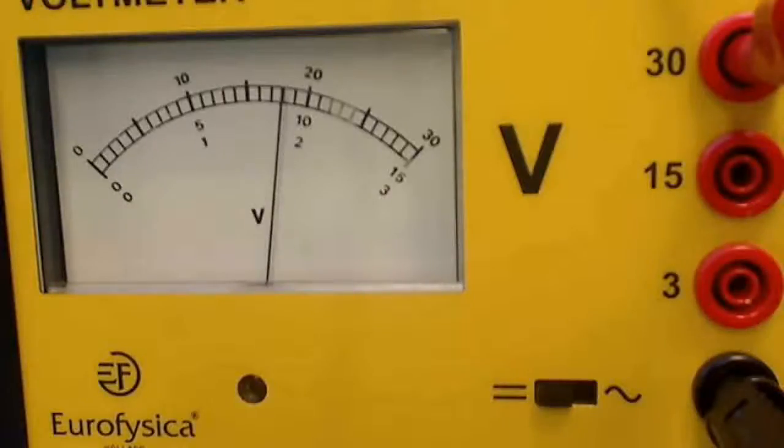In this video I'll explain how to accurately read an analog voltmeter. As you can see, this voltmeter has three different scales for voltages up to 3, 15, and 30 volts.